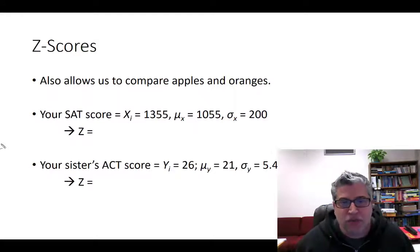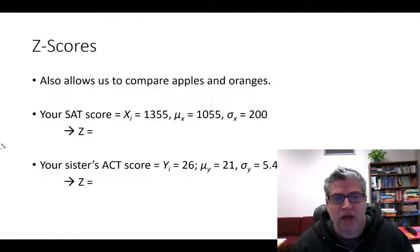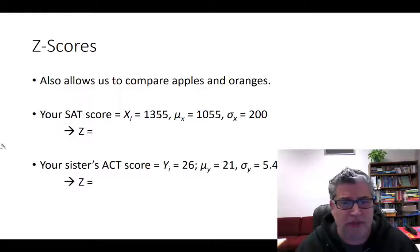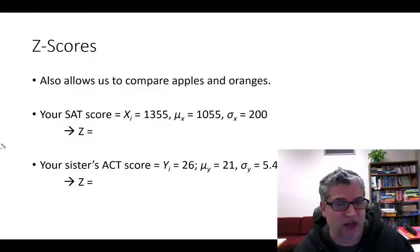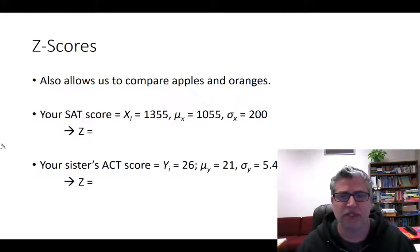Now, these scores also allow us to compare apples with oranges. Let's start a new example. Let's say that you took the SAT and you got a 1355. It's a good score. The national average is actually closer to 1055. And the standard deviation is approximately 200.